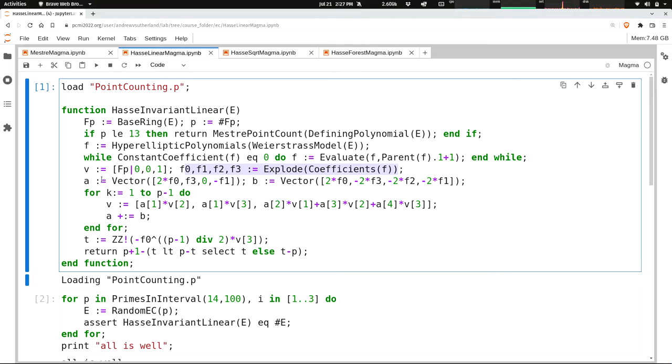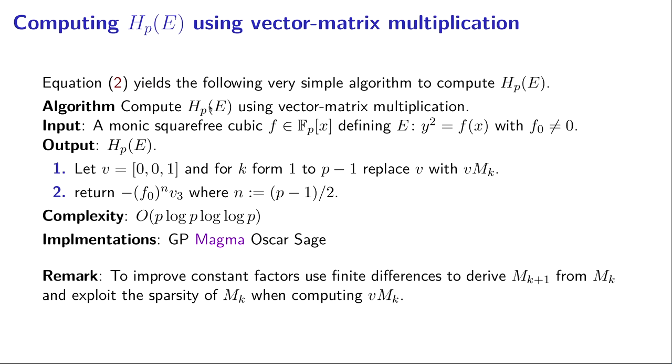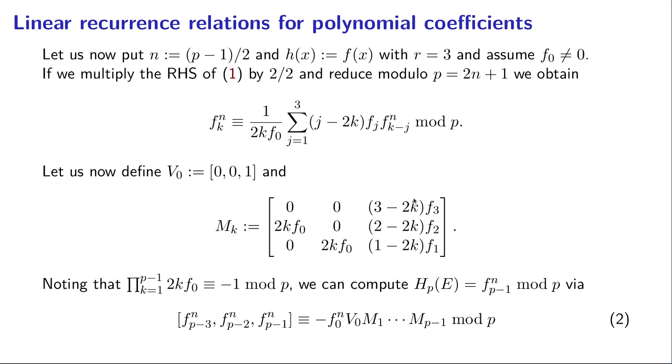But rather than building the matrix, I'm going to just build the parts of the matrix that I actually need to run the algorithm. So I'm constructing the right-hand column and these two entries, and I'm secretly thinking of them as linear polynomials in k. Because if I want to apply finite differences, if I'm thinking of k as a variable that's increasing, I should really be thinking of that as a linear polynomial in k.